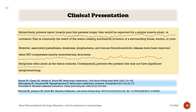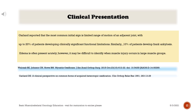Symptoms often abate as the lesion matures. Consequently, patients who present late may not have significant symptomatology. Garland reported that the most common initial sign is limited range of motion of an adjacent joint, with up to 20% of patients developing clinically significant functional limitations. Similarly, 10% of patients develop frank ankylosis.